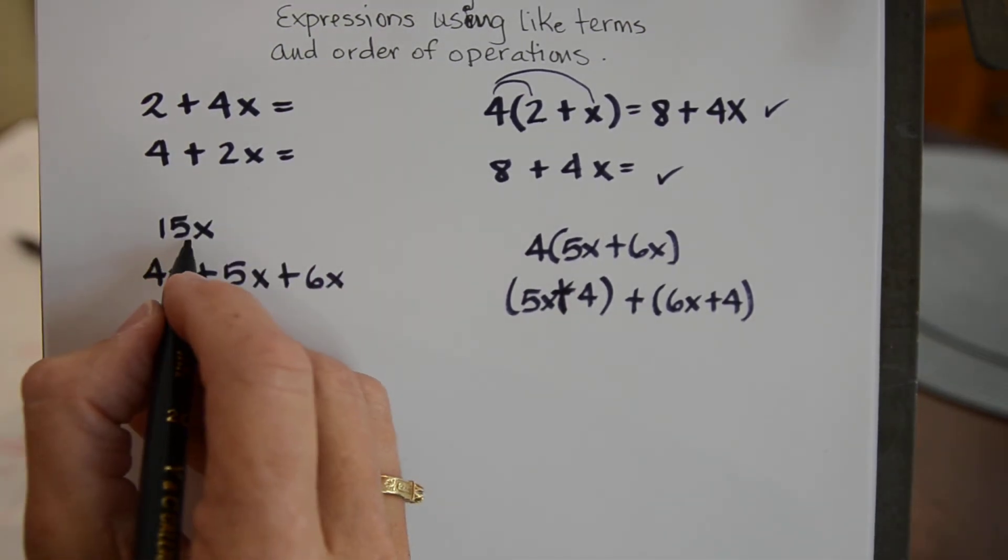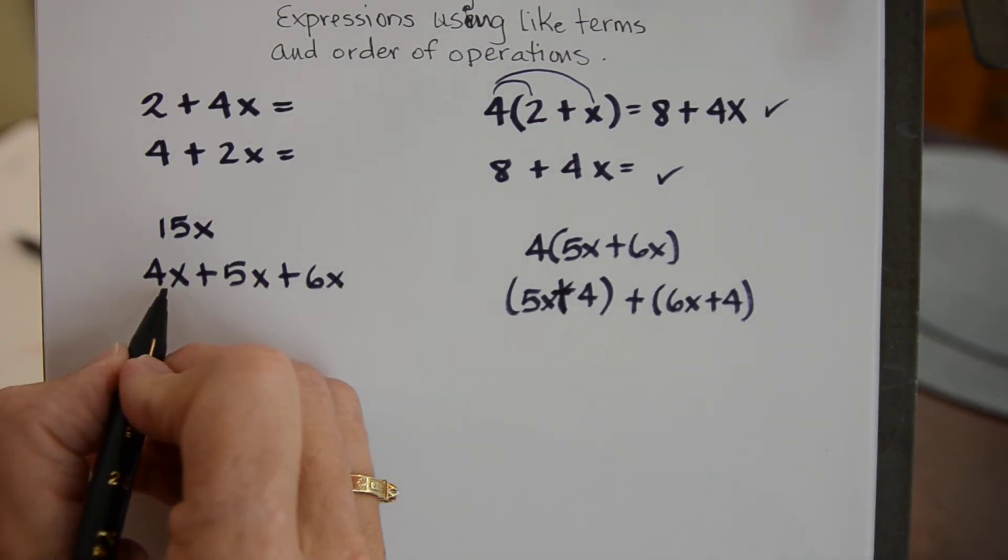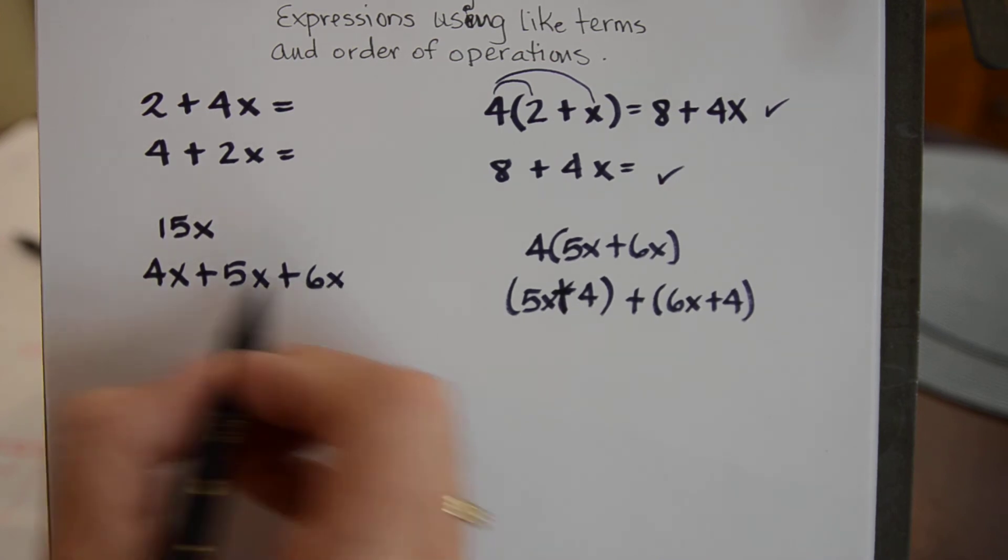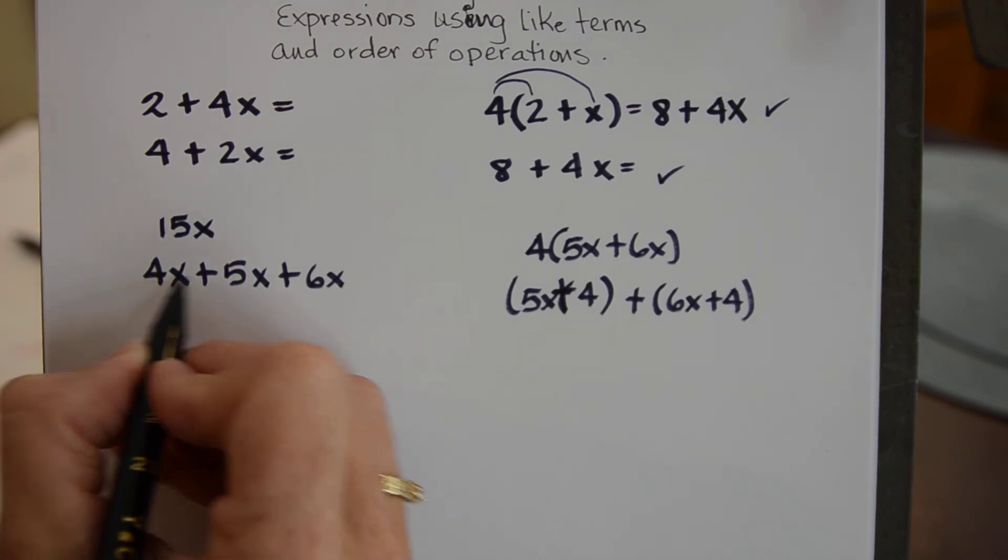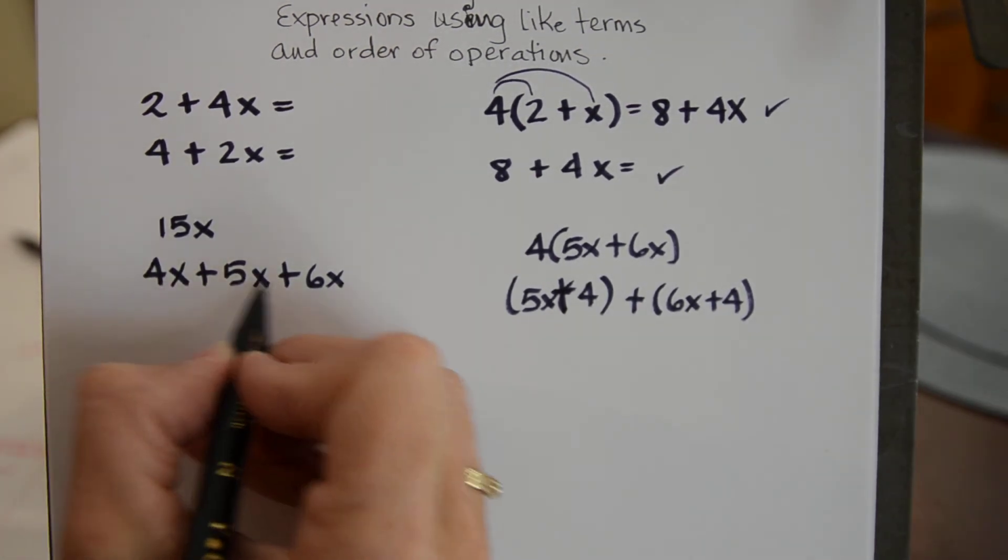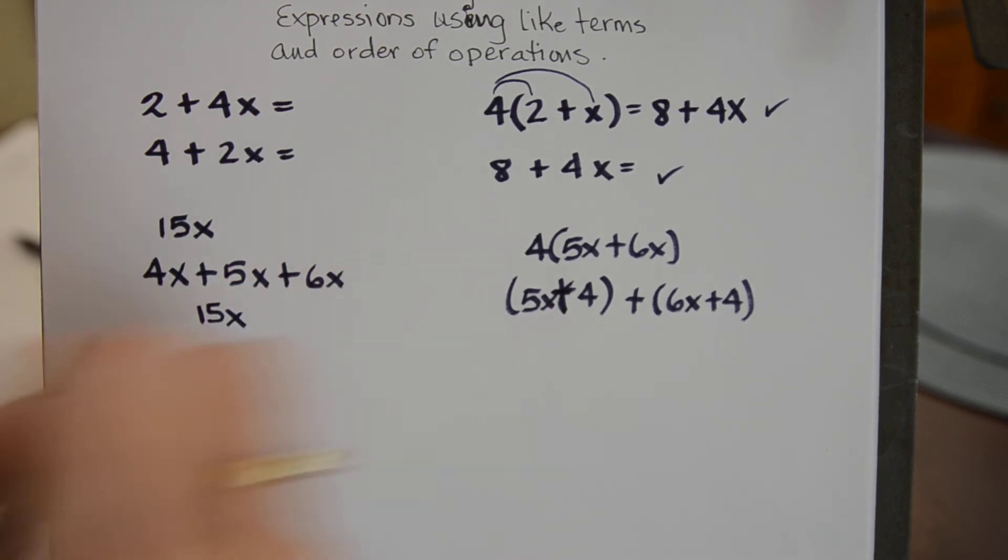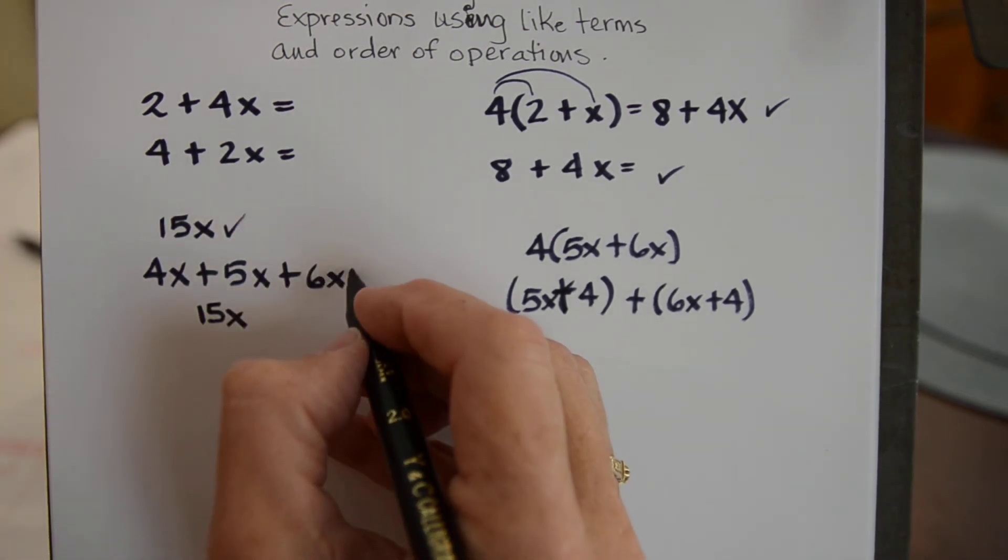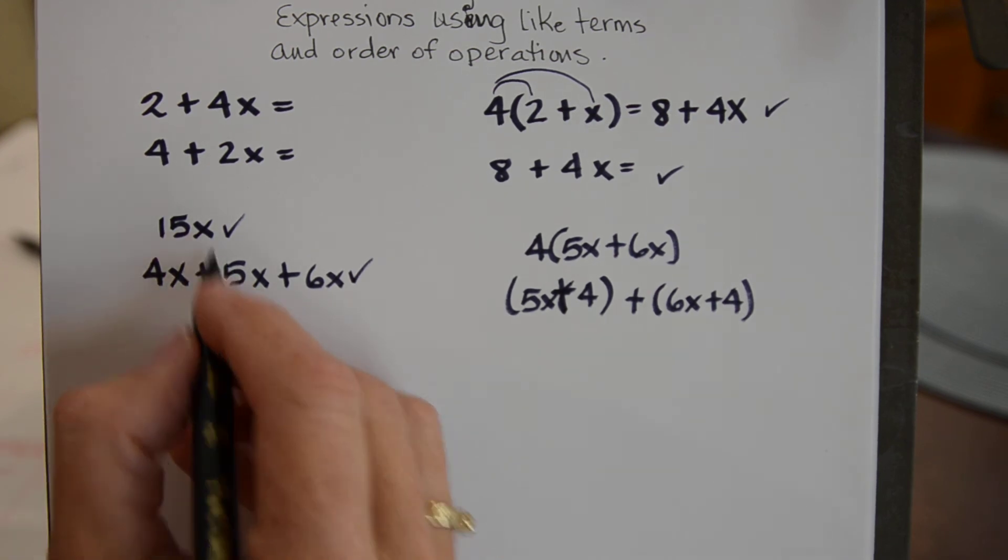This is already in its simplest form so I can't do any more with that. But this, here are like terms. You see how each of these is being combined by addition but they're all attached to the letter x. So I can add these together. 4 plus 5 is 9 plus 6 is 15 and they were all attached to the x. So actually right now this and this are equal to each other because this is what this became.